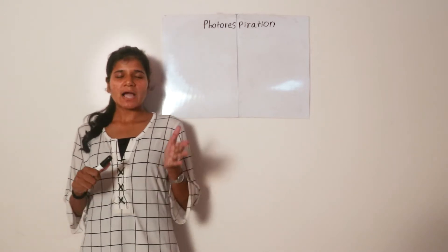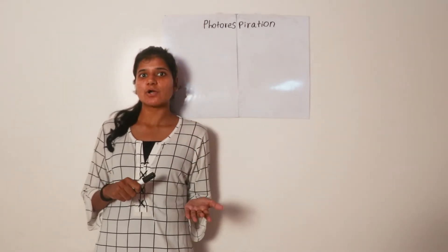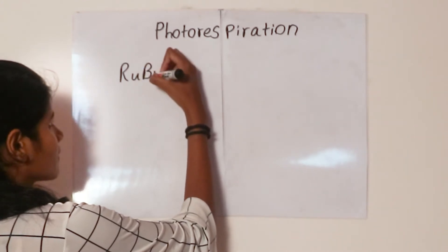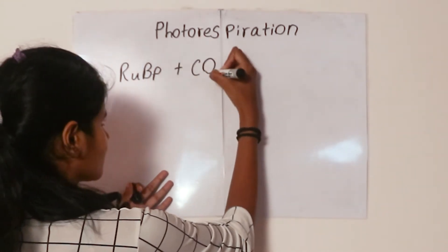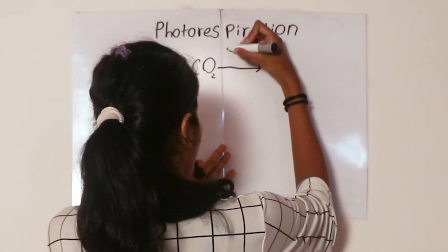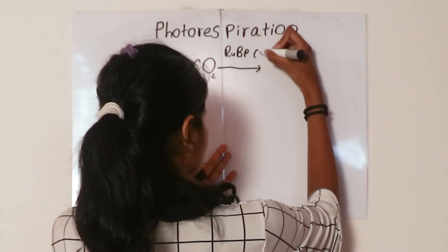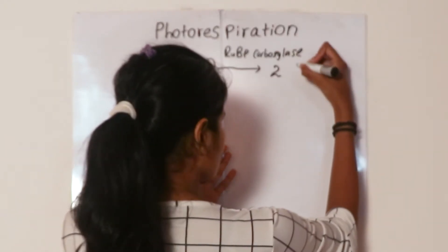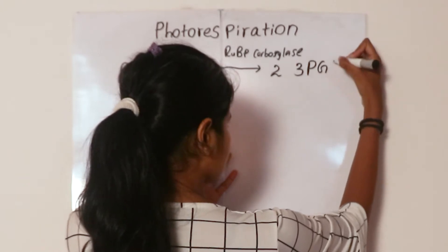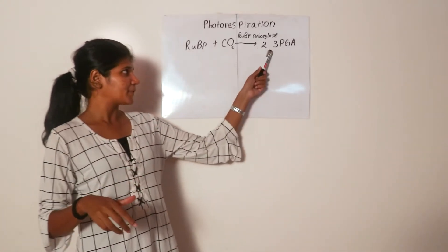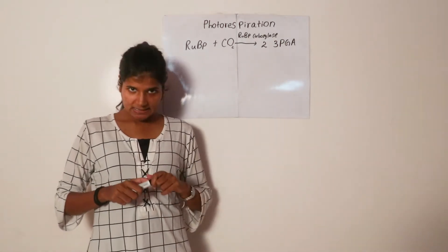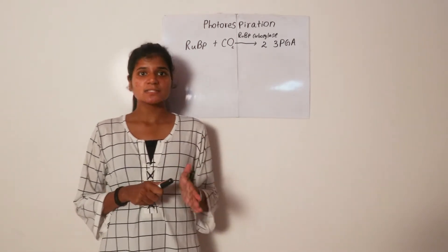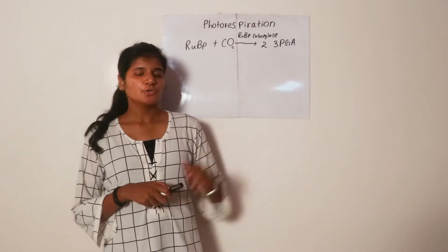If the carbon dioxide concentration in the leaf is higher than the oxygen concentration, RuBP joins with carbon dioxide, catalyzed by RuBP carboxylase, and we get two molecules of 3-phosphoglycerate. This is actually the first stable product formed in the Calvin cycle. Before this product is formed, as discussed in the previous video, an unstable carbon-6 molecule is formed, then it breaks down into two molecules of 3-phosphoglycerate.